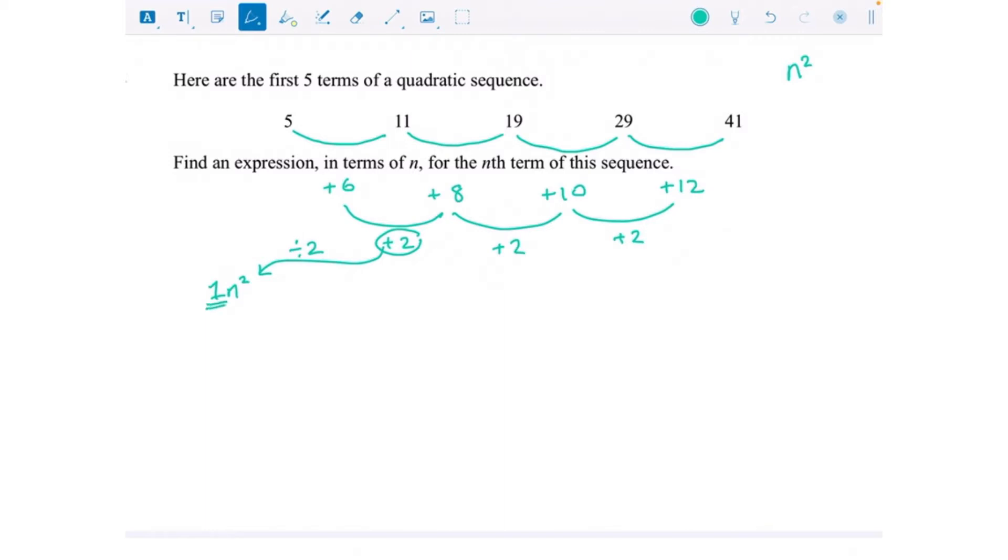Now you don't need to write the 1, but I'm just writing it in there to remind you that we've halved that number and it's 1n squared. n squared is just the sequence that is the square numbers. To get this next bit, this is where sometimes people get a bit confused.